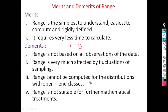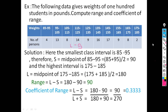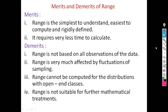Another drawback is range cannot be computed for distributions with open-end classes. For continuous frequency distribution, we need the midpoint of the lowest and highest class intervals. For open-end classes, we cannot calculate these midpoints, so range cannot be calculated. Finally, range is not suitable for further mathematical treatment.